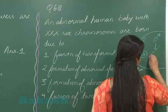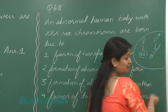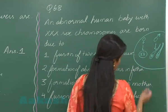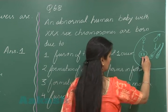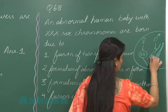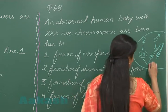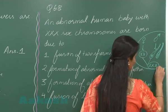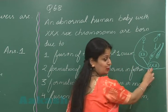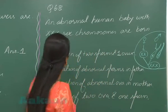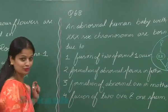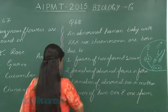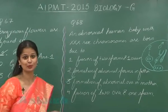In the male, two types of sperms are formed: one which carries the X chromosome and another which carries the Y chromosome. If this abnormal ovum fuses with a normal X-bearing sperm, the chromosome complement of the zygote would be triple X. So for question 68, the right option is formation of abnormal ova in the mother.